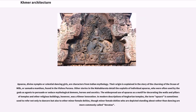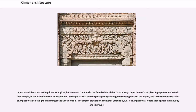Apsaras, divine nymphs or celestial dancing girls, are characters from Indian mythology. Their origin is explained in the story of the churning of the ocean of milk, or Samudra Manthan, found in the Vishnu Purana. Other stories in the Mahabharata detail the exploits of individual Apsaras, who are often used by the gods as agents to persuade or seduce mythological demons, heroes, and ascetics. The widespread use of Apsaras as a motif for decorating the walls and pillars of temples was a Khmer innovation. In modern descriptions of Angkorian temples, the term Apsara sometimes refers not only to dancers but also to other minor female deities, though those depicted standing rather than dancing are more commonly called Devatas. Apsaras and Devatas are ubiquitous at Angkor, but are most common in foundations of the 12th century.